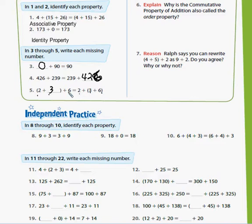Number six, why is the commutative property of addition also called the order property? The reason they call it is you can change the order and it's not going to change your answer. So it just means you can change the order and it's not going to change your answer.